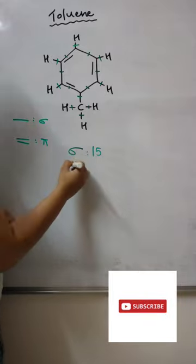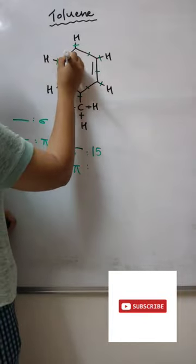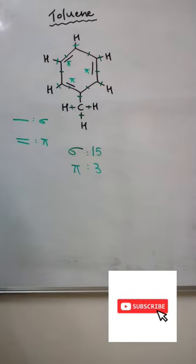And now we look for pi bonds. So, we have to identify the double bonds which we can see only 3. So, this is a pi bond, this is a pi bond and this is a pi bond. So, total number of pi bonds in toluene are 3.